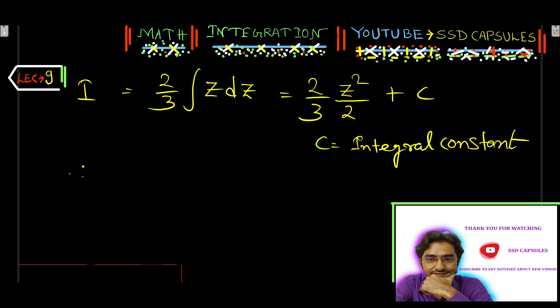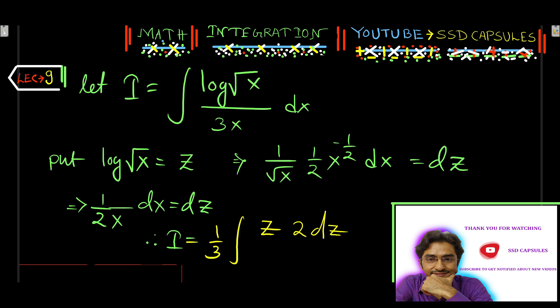Therefore, I equal to 1 by 3, z means what? log root x. So it's 1 by 3 log root x whole square plus c.